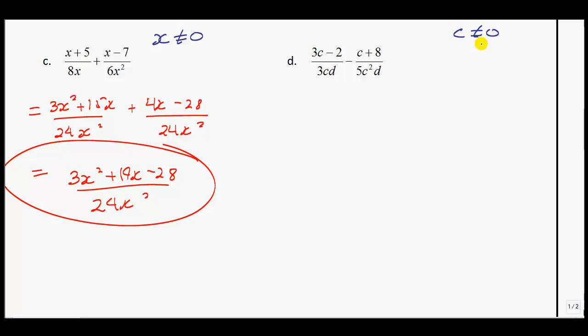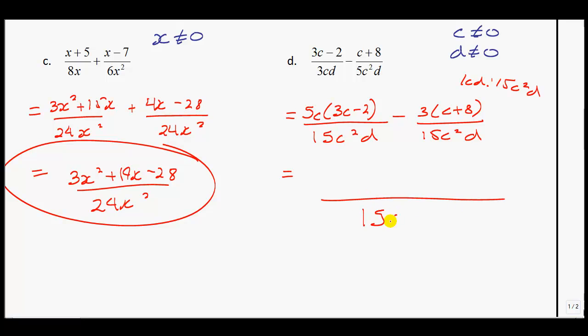Let's take a look at D. I will see that C cannot equal 0, D cannot equal 0. My LCD for this one—3 and 5, a number that they both go into, is 15. And then we'll have C squared D. I'll write each one of these as something over 15C squared D. If you want to write it as all one common denominator, that's fine. I'm just in the habit of writing them as two separate ones. For this one, you multiply it by 5C. If this is easier for you, you can write this intermediate step. On the other side, what do you multiply the 5C squared D by? You multiply it by 3, C plus 8.